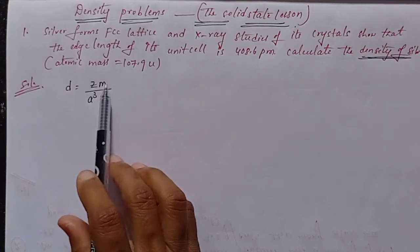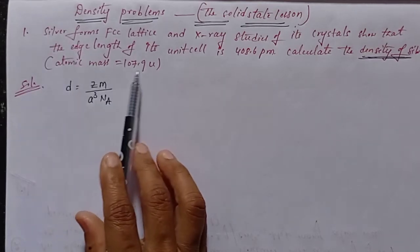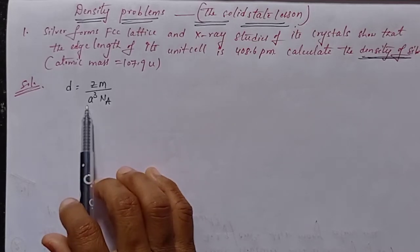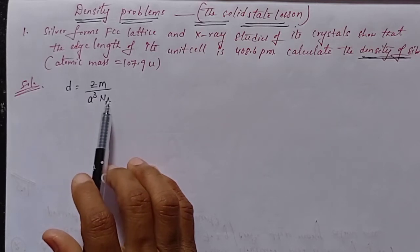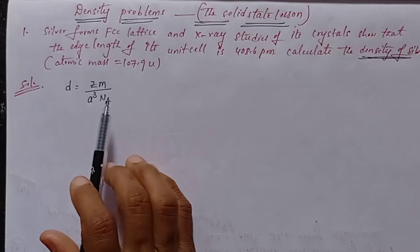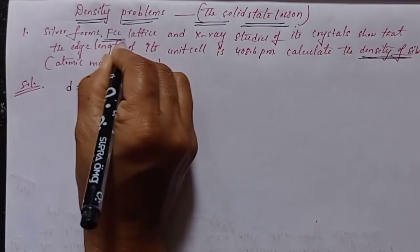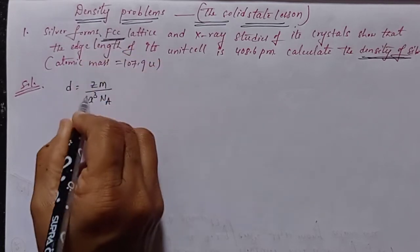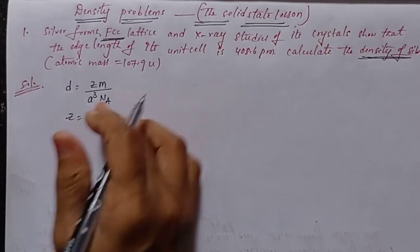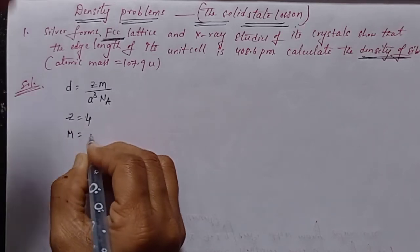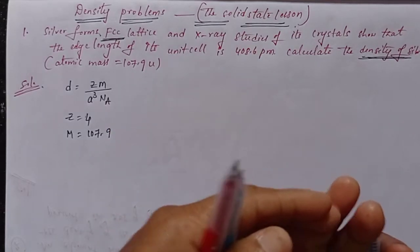Here, z is the number of particles per unit cell. M is the molecular weight or atomic mass — for silver, we take the given atomic mass. 'a' is the edge length, and Nₐ is Avogadro's number. Since this is an FCC lattice, z is equal to 4 — that is the number of particles per unit cell in FCC. M is equal to 107.9 (unified atomic mass units).